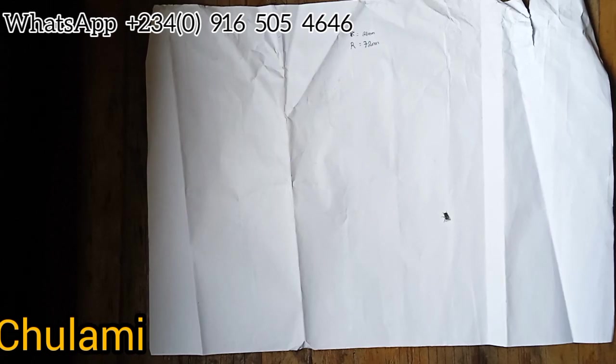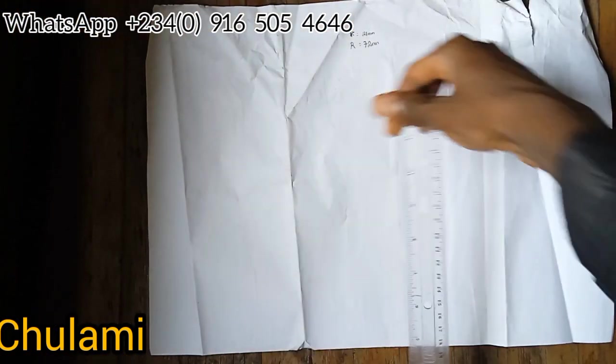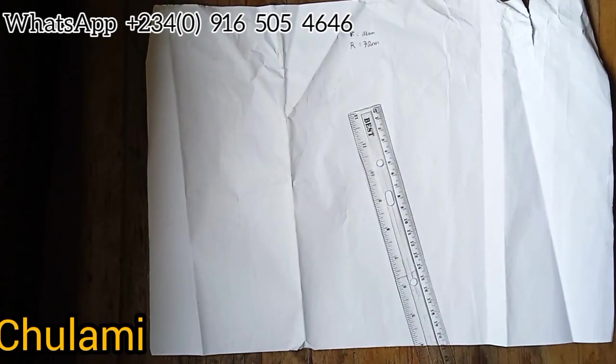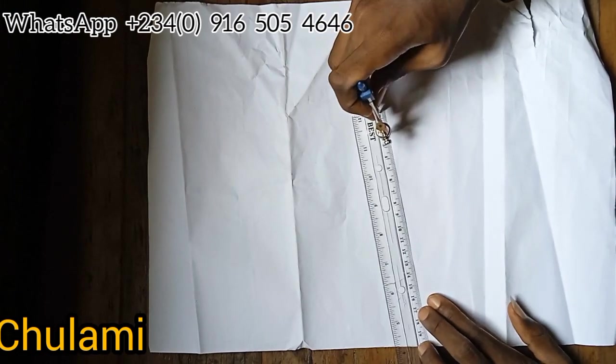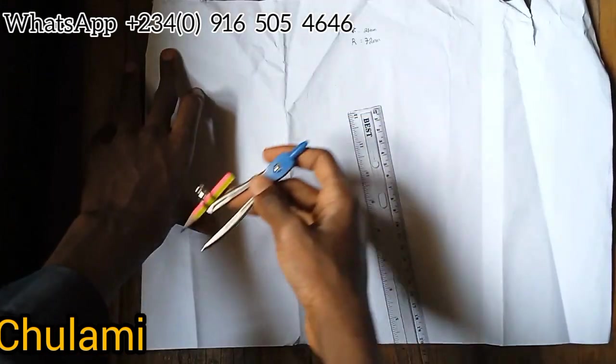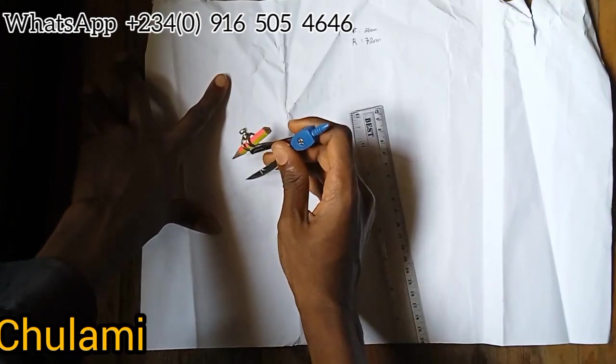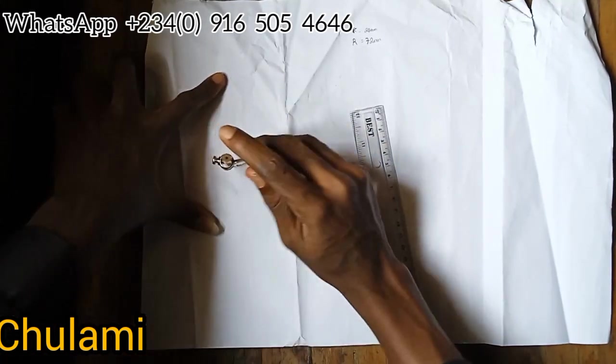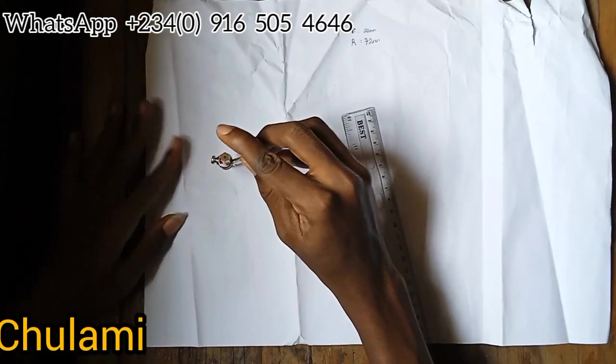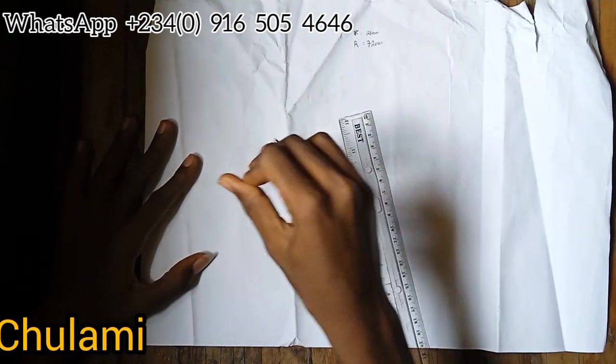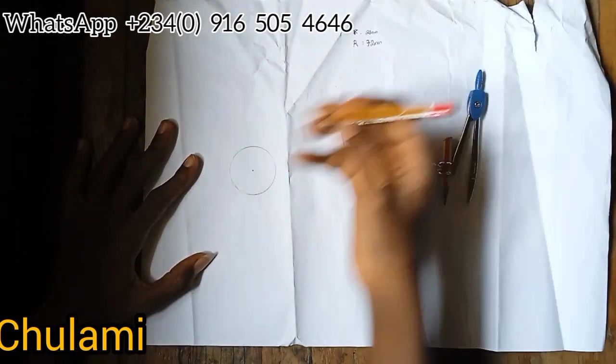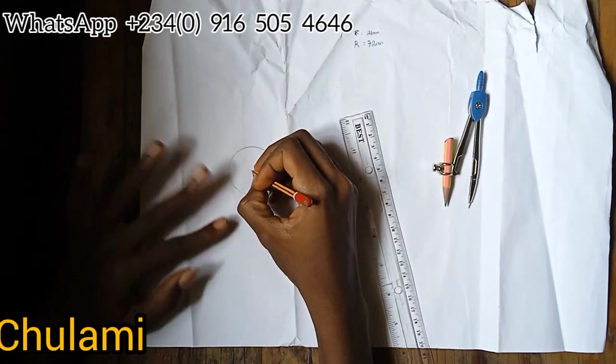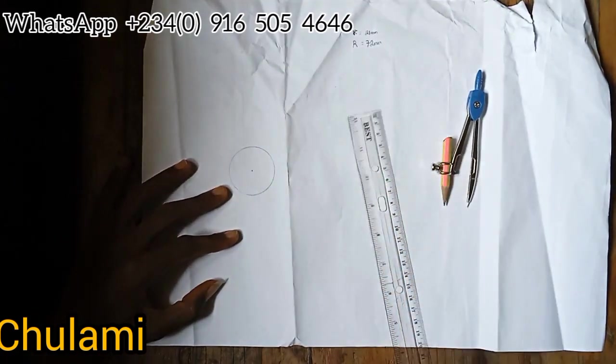The first thing I'll do is get my material and measure 21 millimeters towards somewhere around this area, and I'll draw a circle.